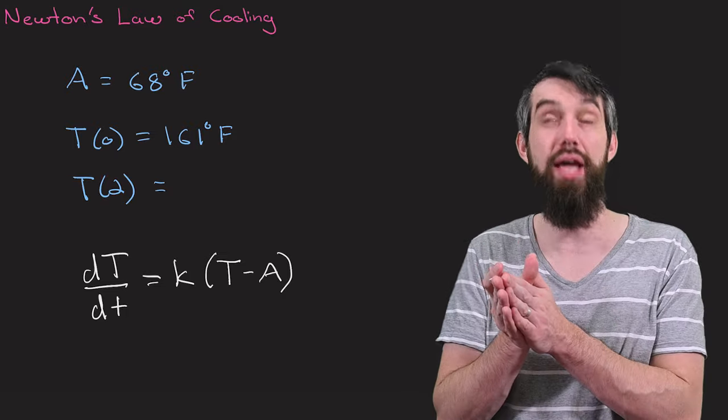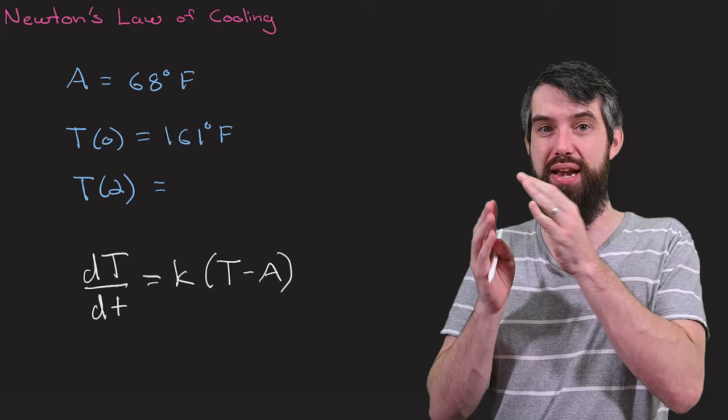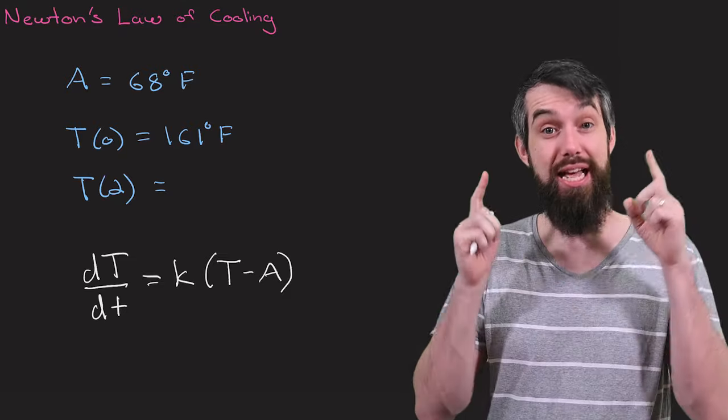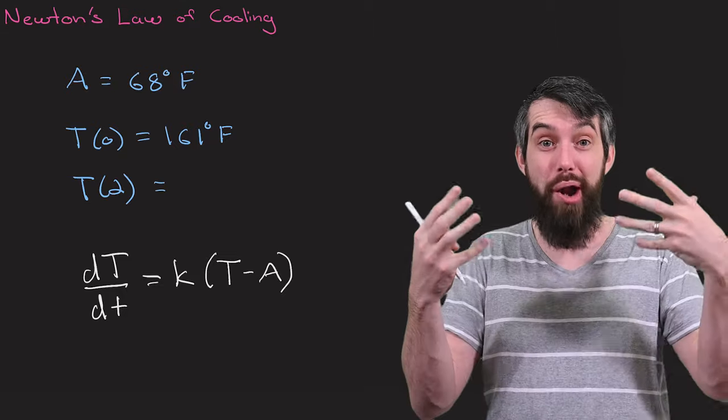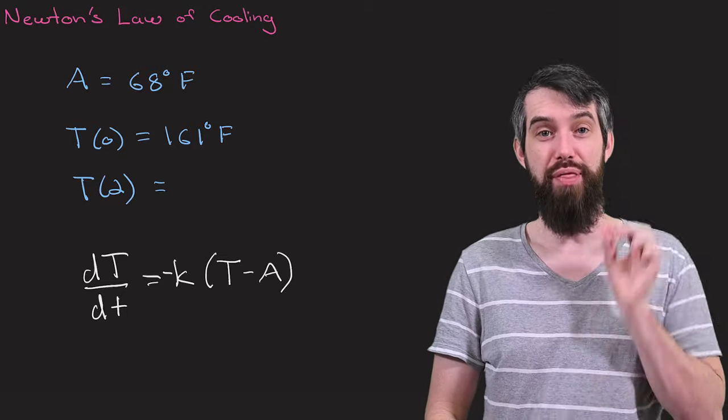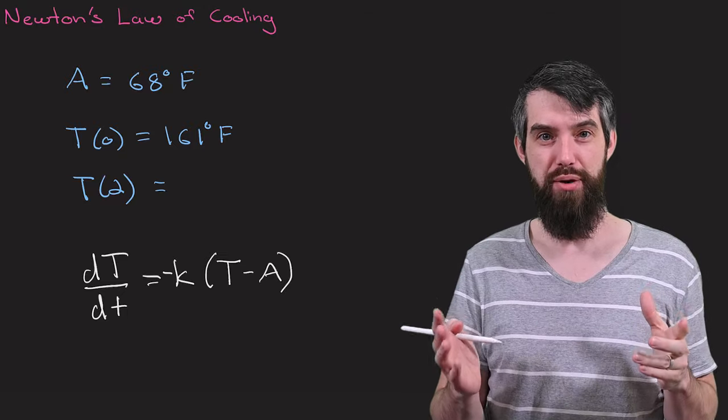And then, is this plus or minus? Okay, T is bigger than A, because the temperature of my cup is hotter than my ambient temperature. So that's positive. And then when it's hotter, it should be cooling. The rate of change should be going down. It should be negative. So I'll put a negative there. That is my model for this scenario.